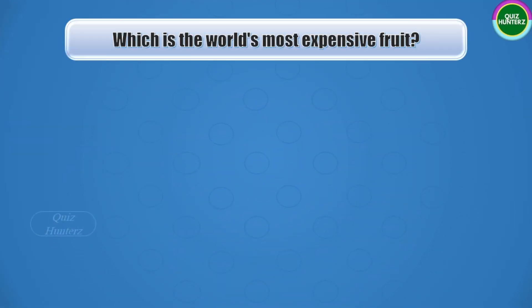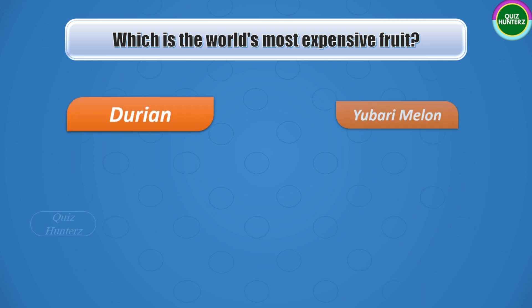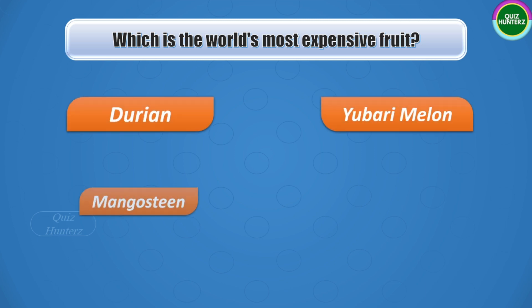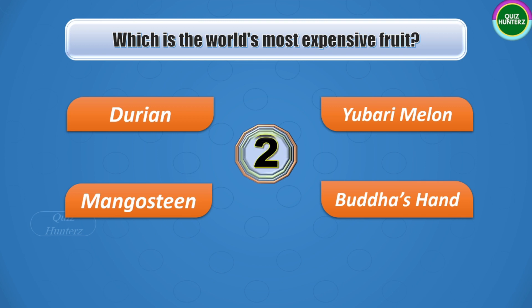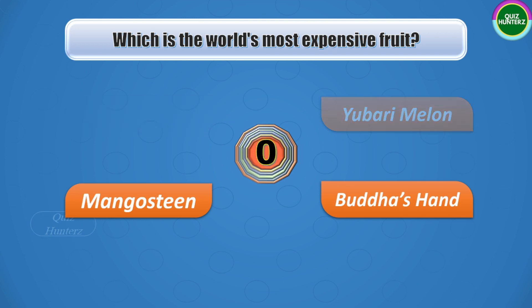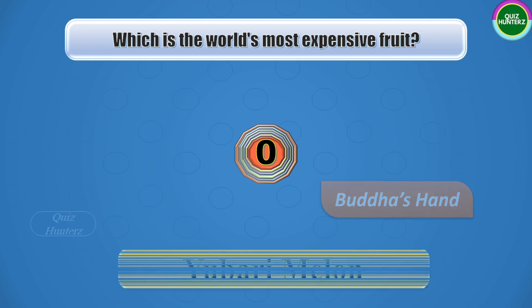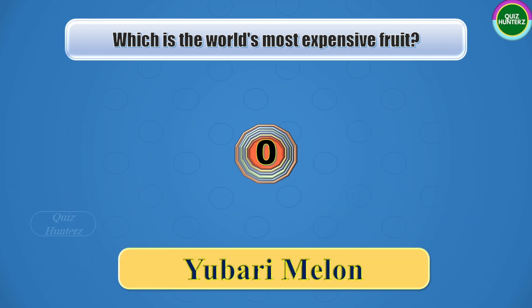Next question: which is the world's most expensive fruit? Your options are durian, Yubari melon, mangosteen, or Buddha's hand. Your time starts now. And the correct answer is Yubari melon.